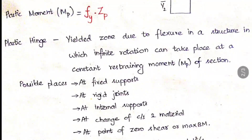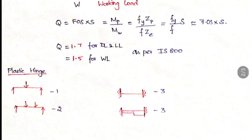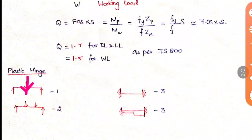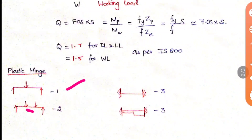Let us look at four examples. In the first case — a simply supported beam with one concentrated load — the load is the only location for maximum bending moment, so there is only one plastic hinge. In the second case — the same simply supported beam with two concentrated loads — between the two loads there is pure bending with zero shear, so there are two possible locations, giving two plastic hinges.